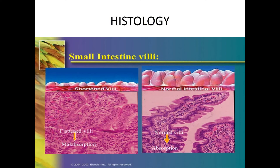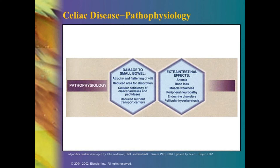Histologically, normally there are intestinal villi and microvilli which absorb nutrients. On endoscopy, shortened villi are found — clearly seen on the histopathological slide on the left side showing short villi. The pathophysiology is damage to the small bowel: atrophy and flattening of the villi reduce the surface area for absorption. Cellular deficiency of disaccharidases and peptidases reduces nutrient transport. It is an osmotic type of diarrhea, resulting from destruction of the microvilli of the small intestine.